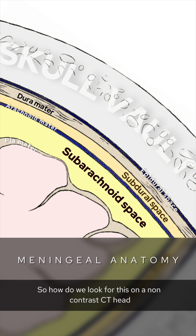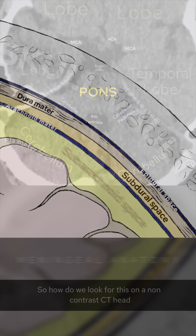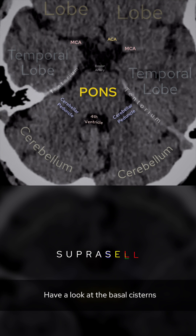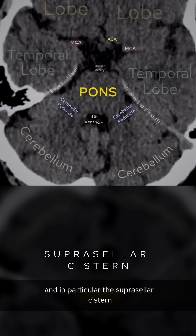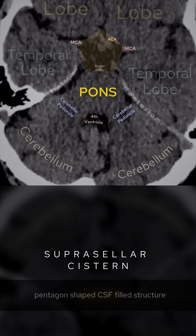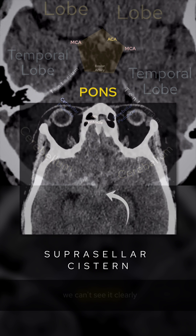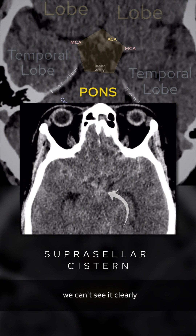So how do we look for this on a non-contrast CT head? Have a look at the basal cisterns, and in particular the suprasellar cistern. We should see this as a pentagon-shaped CSF-filled structure, but in our case we can't see it clearly as it's filled with blood. This is subarachnoid hemorrhage.